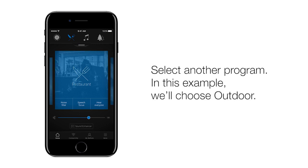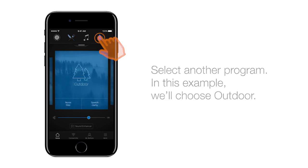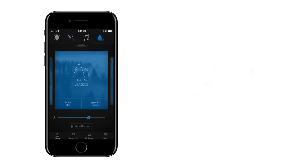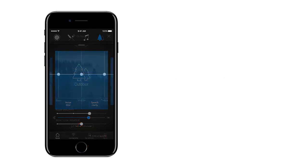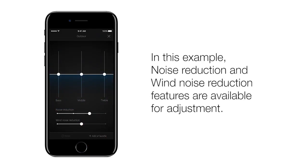Select another program. In this example, we'll choose Outdoor. Tap Sound Enhancer — the button on the bottom just above the bottom menu. In this example, noise reduction and wind noise reduction features are available for adjustment.